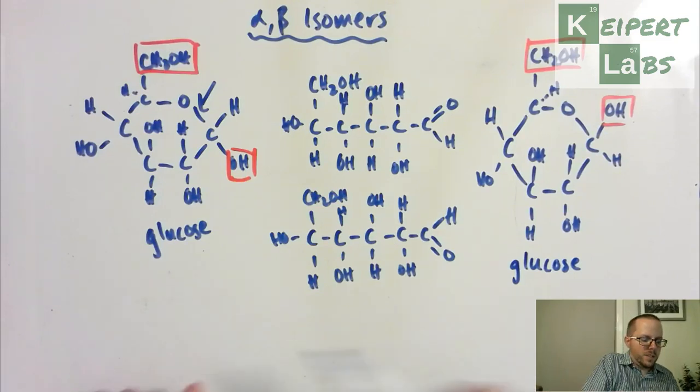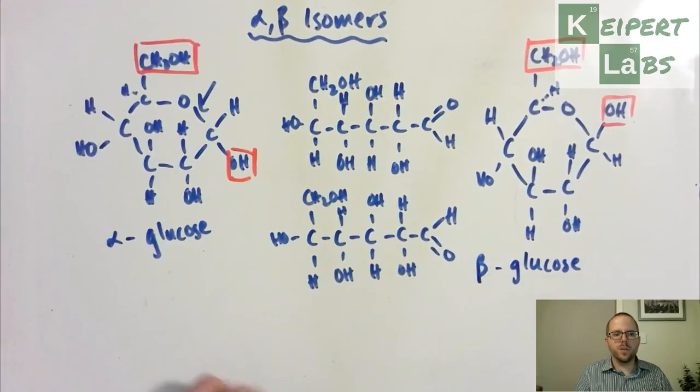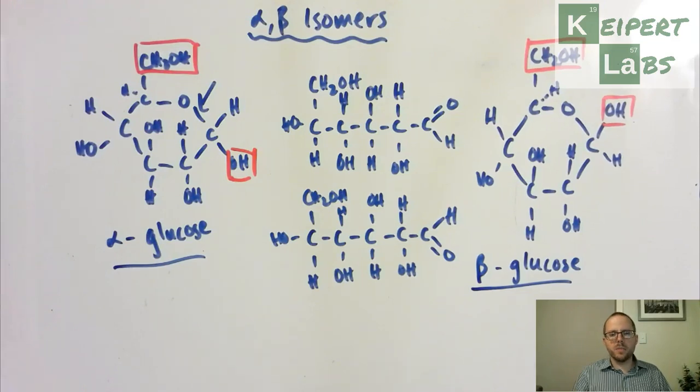we give them a little symbol out the front. This one is known as alpha-glucose and this one is known as beta-glucose. So the first two letters of the Greek alphabet to distinguish between these two versions. They are isomers of one another. We talked about isomers back with halo-alkanes, same molecular formula but different structure.